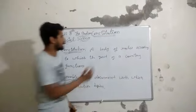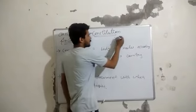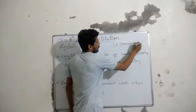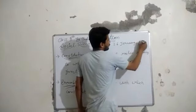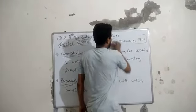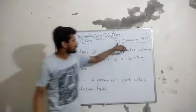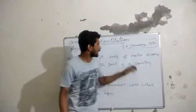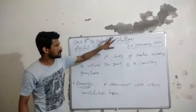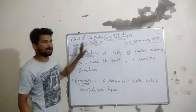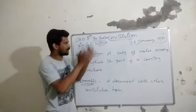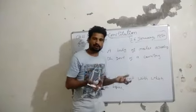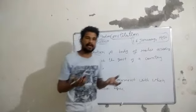Our Constitution came into force on 26th January 1950. In this chapter we will read about all functions of a country, how the Constitution was passed, and its many articles and schedules.